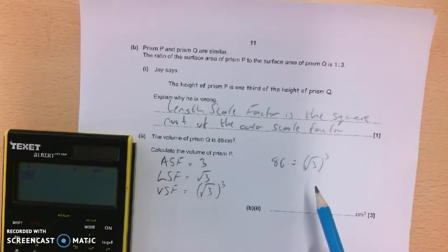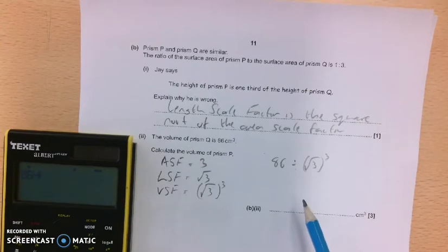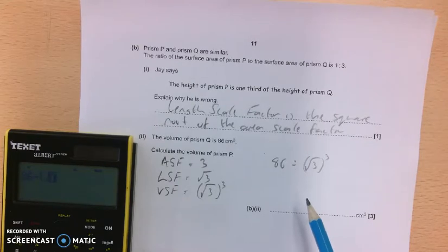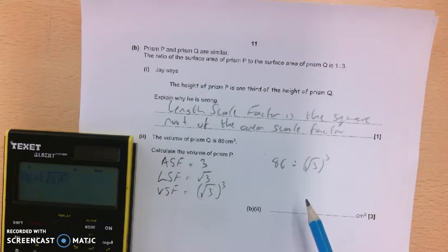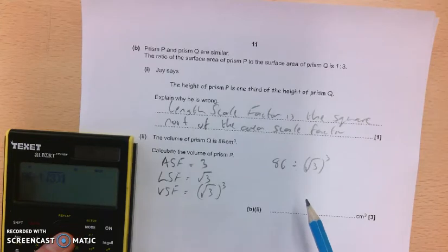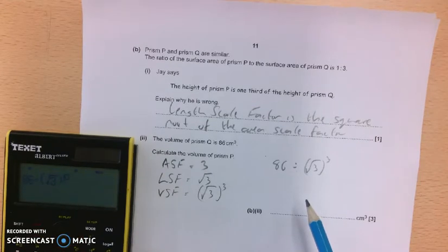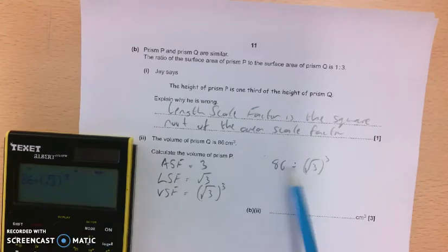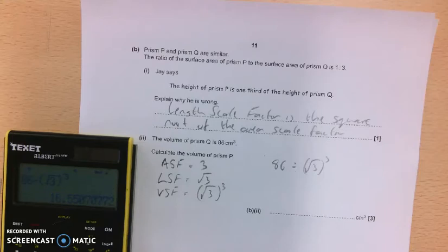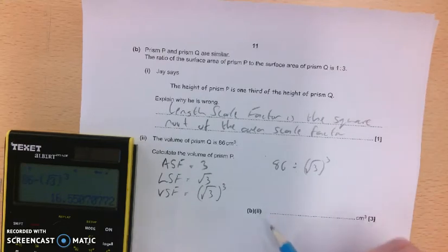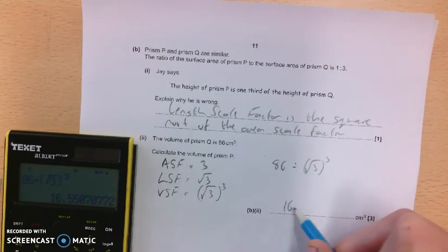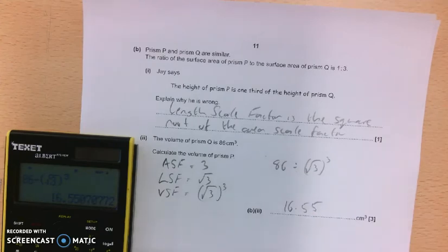86 divided by the square root of 3. Make sure I'm using the calculator properly. Just use the cursor here. Cube. So 86 divided by the square root of 3. So I get an answer of about 16.55 centimeters cubed.